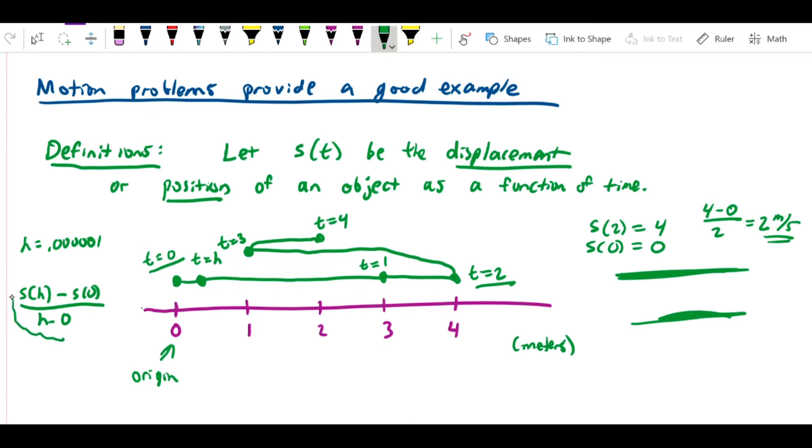But if you notice, this looks very much like the calculation we did when finding the derivative. We were asking what is s(0+h) minus s(0) over h, which is exactly what we have here.